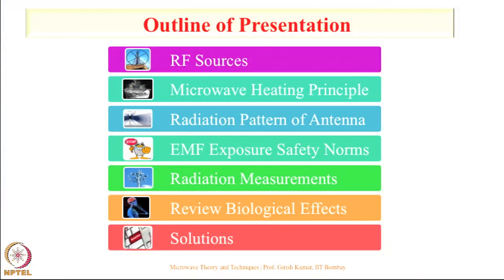The outline of today's presentation: we will first talk about RF sources present for commercial as well as defense applications, then microwave heating principle. Many of you have used or seen a microwave oven and know it can do cooking. Then we'll discuss radiation patterns of antennas, safety norms in India and other countries. We've done radiation measurements at more than 1000 places, and then we'll review biological effects.